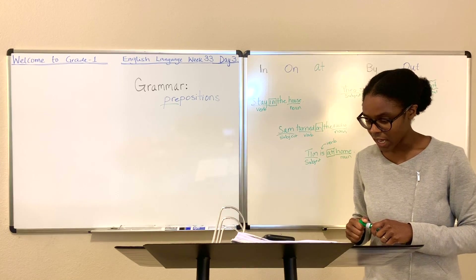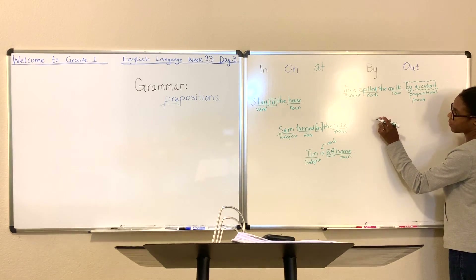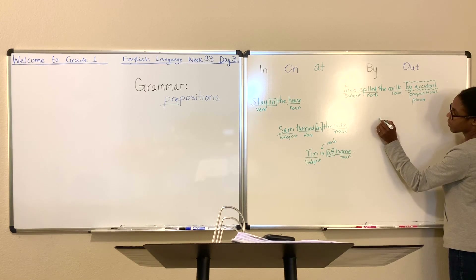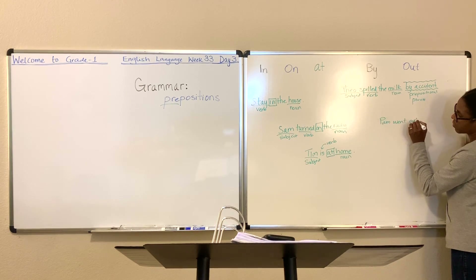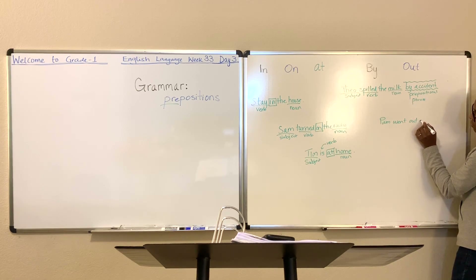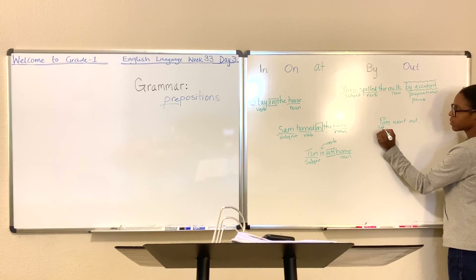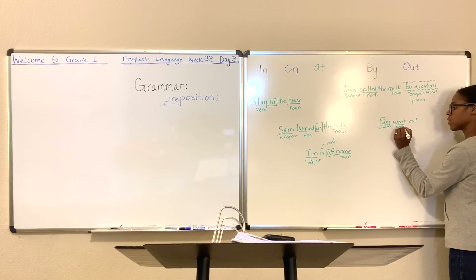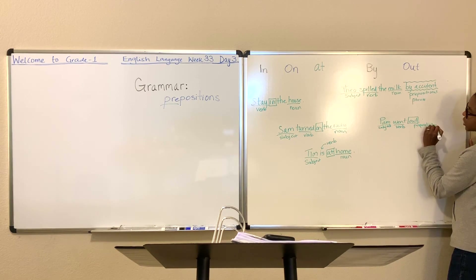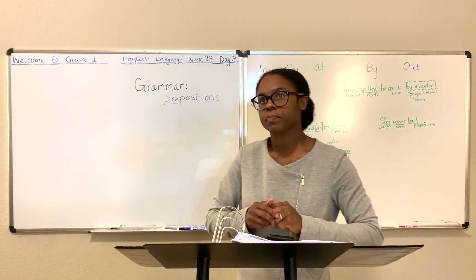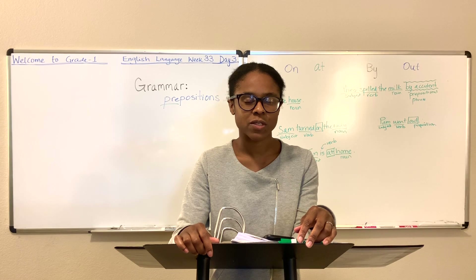Finally, let's look at a sentence using the word 'out.' Pam went out. Pam is the subject, 'went' is the verb, and 'out' is the preposition. Where did she go? She went out. As you're putting your sentences together, I just want it to become easier and easier for you to identify the different parts of speech in your sentence.